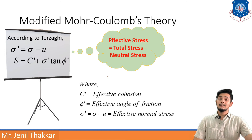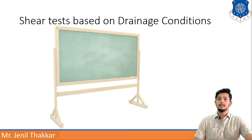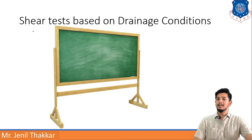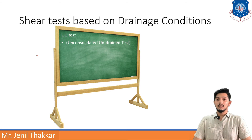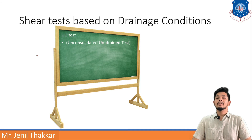Let us understand shear tests based on drainage conditions. The first is the UU test — Unconsolidated Undrained test. In this test, no moisture is permitted in the first stage (consolidation stage), making it unconsolidated. Moisture is also not permitted in the second stage where the specimen is sheared, making it undrained. This test is generally preferred for clays and is also known as the Q (quick) test because it gives results in a few minutes.